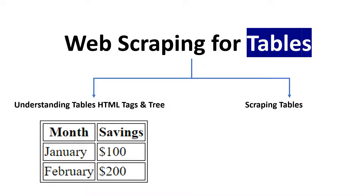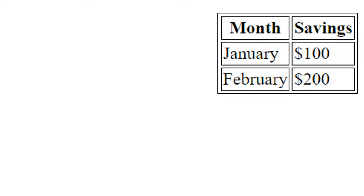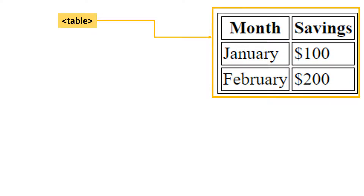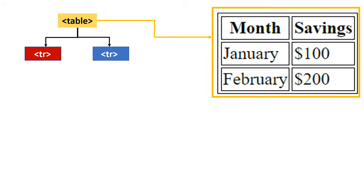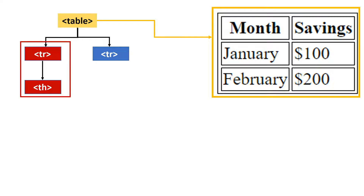Let's understand the structure first. The HTML for a table starts with the table tag, which represents the whole table. This table tag has child tags called tr, which represents a table row. In this case there are two tr tags. Inside the first one, we have another child tag called th, which stands for table heading. In combination, these represent the column header portion of the table.